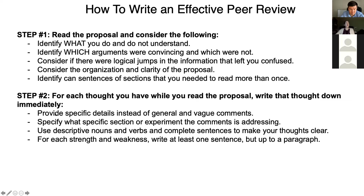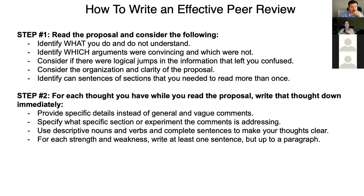Some tips: provide specific details instead of general vague comments. Specify which section or experiment the comment is addressing — don't leave it to chance. Say 'Aim 1, Experiment 1' and then give your comment. Use descriptive nouns and verbs and complete sentences to make your thoughts clear. For every criteria, write at least three comments of strengths and weaknesses in complete sentences, but feel free to expand to a full paragraph if you really need to make a critical point as clear as possible to the proposal writer.